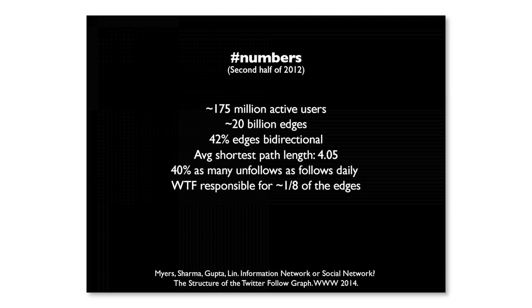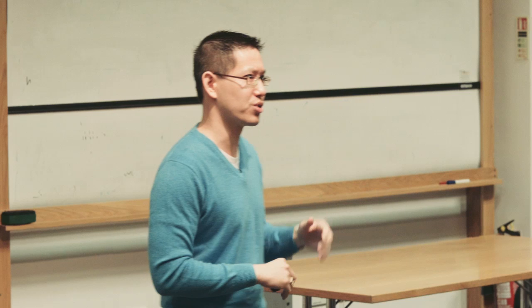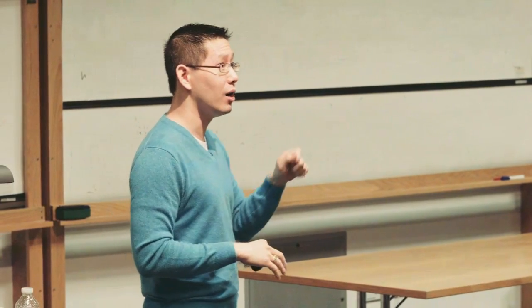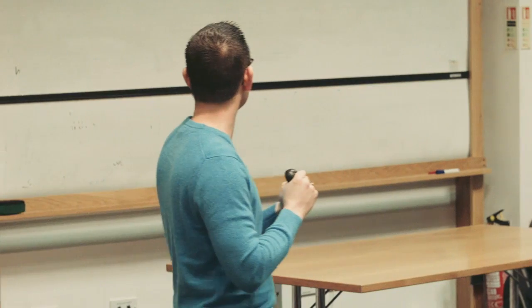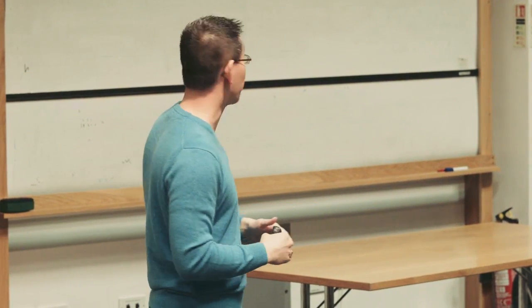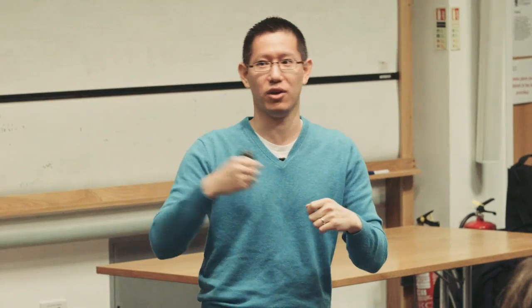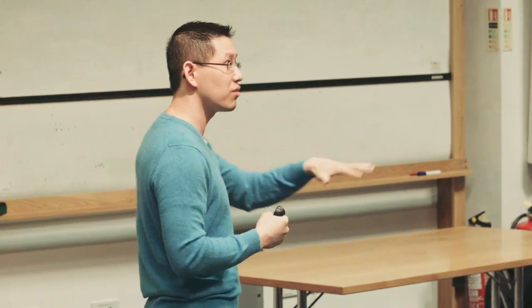I'll share some numbers — people always like to know how big it is. During the second half of 2012, we had 175 million users — a big but not too huge graph — with 20 billion edges. About 42% of edges are bidirectional. Average shortest path length is about four — four degrees of separation. Interestingly, there are 40% as many unfollows as follows on a daily basis, so people are really curating who they follow. And the WTF service is responsible for around one-eighth of the total links and edges created in this graph.